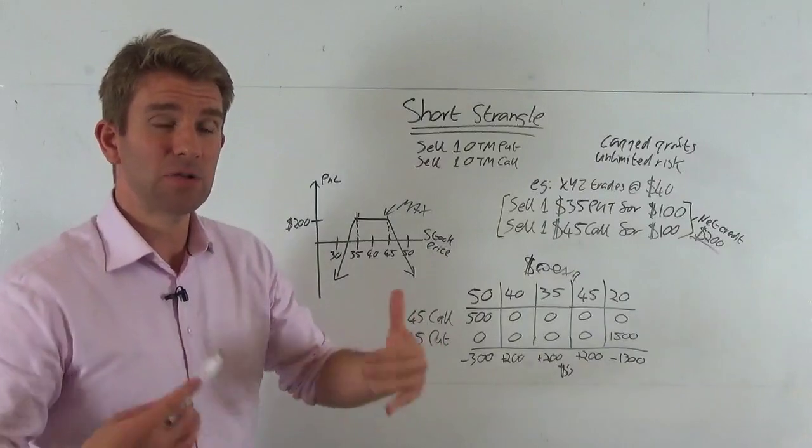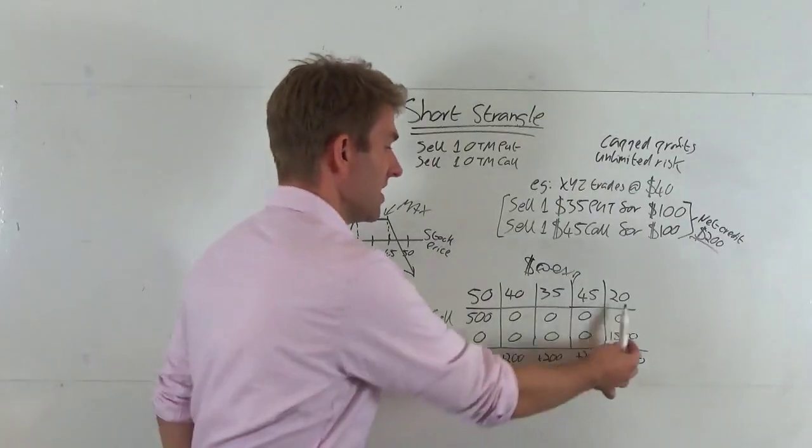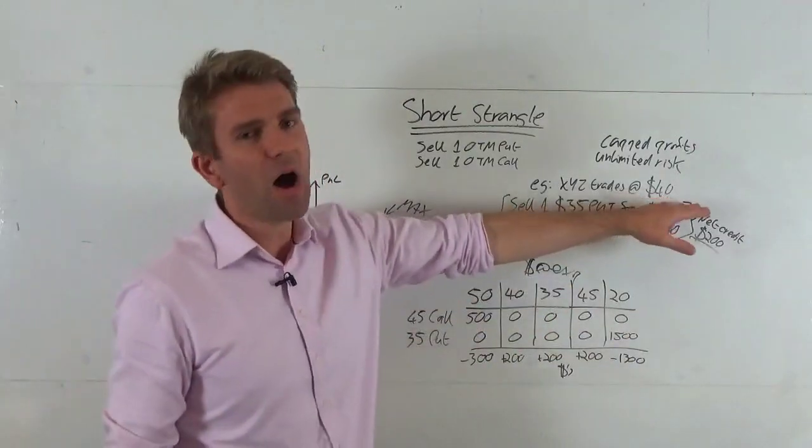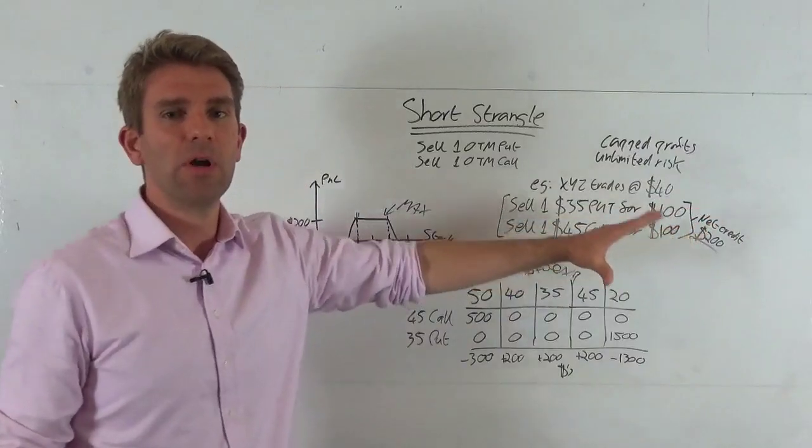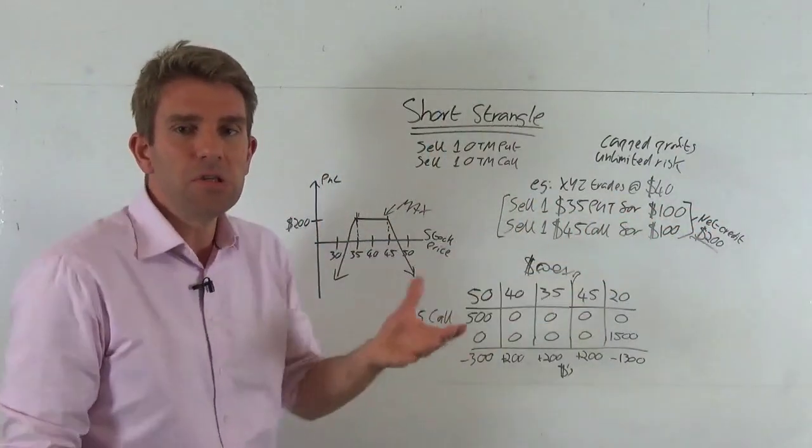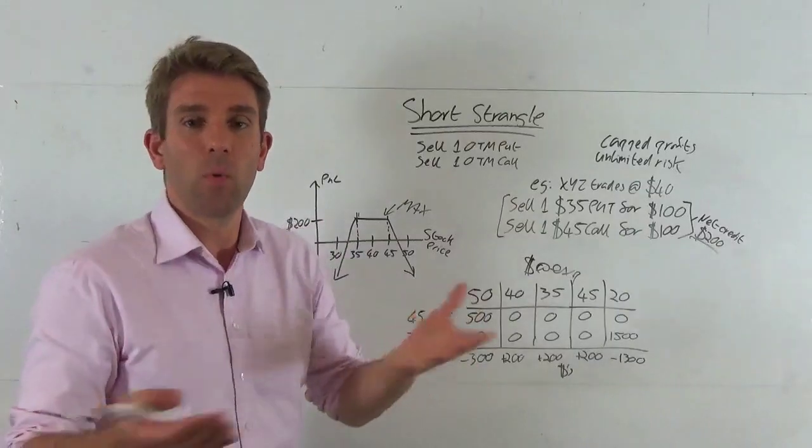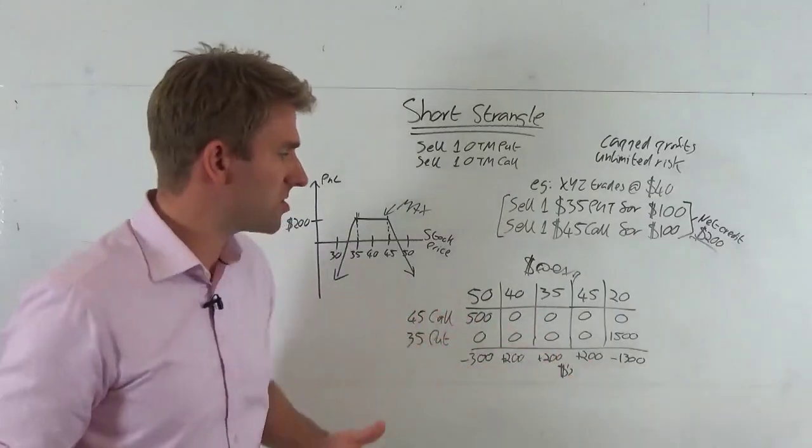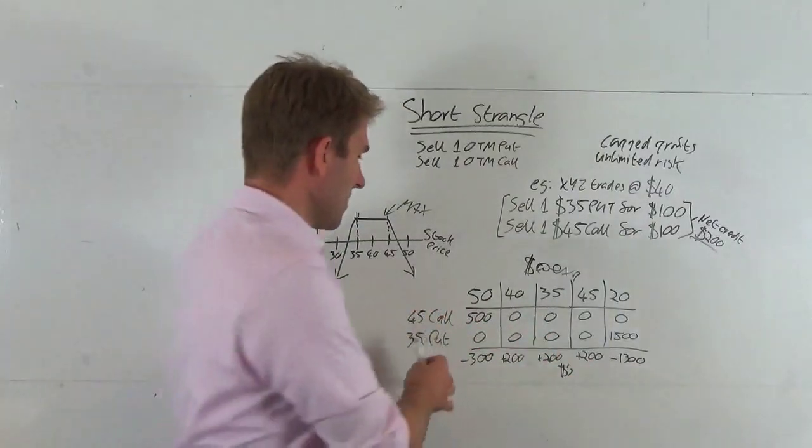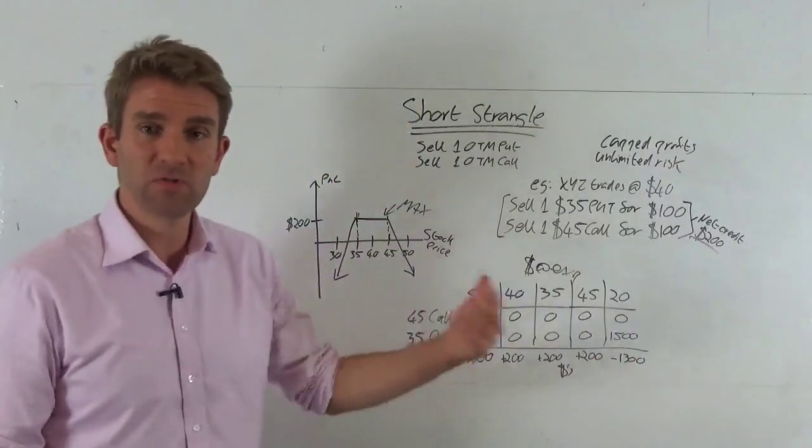What about if we go even further just to see how bad this loss could potentially get? Let's say it goes to $20. Now bearing in mind that would be halving of the stock in this example, so depending on how far in the future you've got, you've got to weigh up whether that's likely to happen and weigh up the consequences if it does. But anyway, let's do the sums on it. The $45 call obviously becomes worthless.